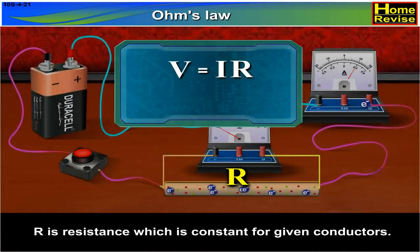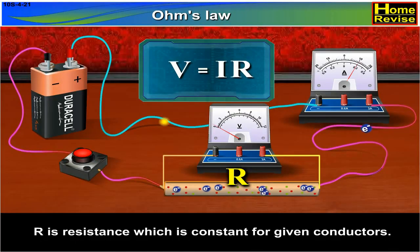R is resistance, which is constant for given conductors.